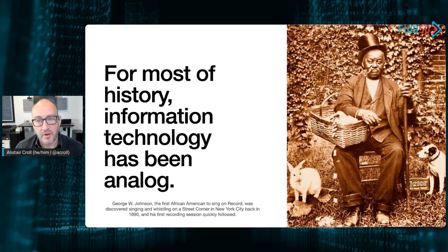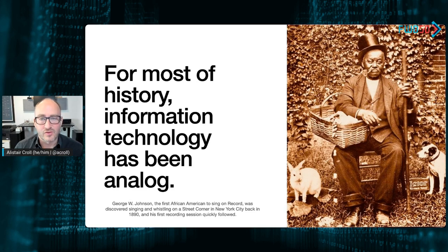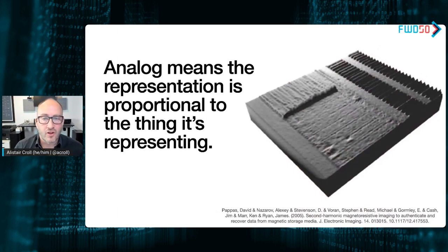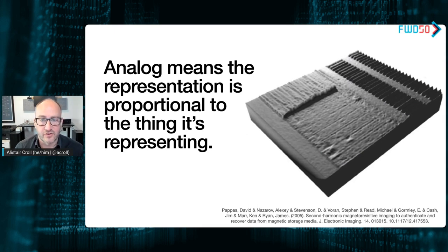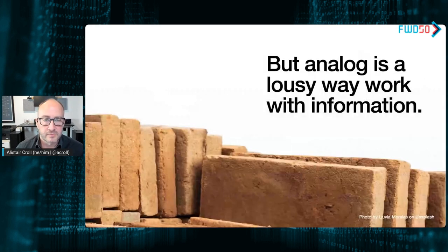George W. Johnson, born in 1856, was a pop star in his day — the first African American to sing on record. He sold more than 25,000 wax cylinders. To do this, he would literally play the same song sometimes 50 times a day while many recording devices were pointed at him, because that's how you copied analog. All analog technology is still based on that fundamental idea — one physical thing is analogous to another, whether magnetic particles on a tape or the width and height of electromagnetic pulses in a radio broadcast. But analog is a terrible way to work with information.